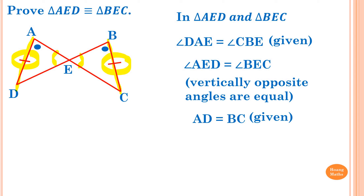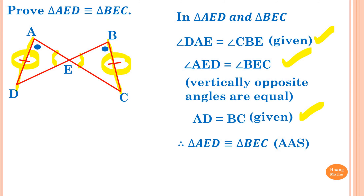Now we have two corresponding angles equal and one corresponding side equal. We can write the final statement: therefore triangle AED is congruent to triangle BEC. The rule is Angle Angle Side (AAS) — two corresponding angles and a corresponding side are equal.